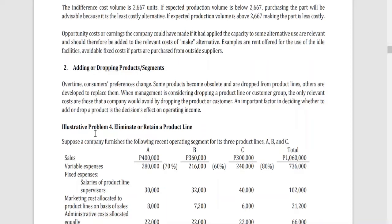When management is considering dropping a product line or customer group, the only relevant costs are those that the company would avoid by dropping the product or customer. Remember always that in relevant costing, the costs considered as relevant are those which can be avoided when you choose the other alternative.